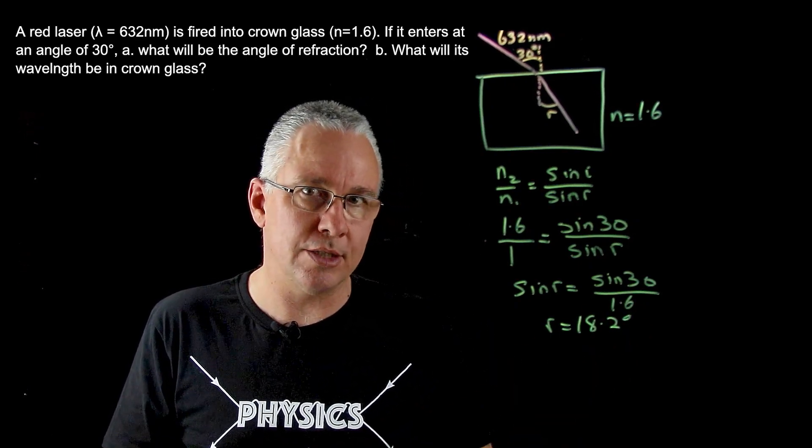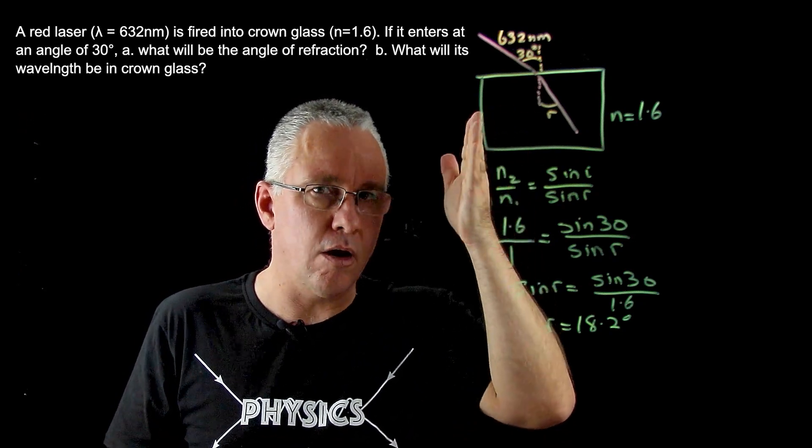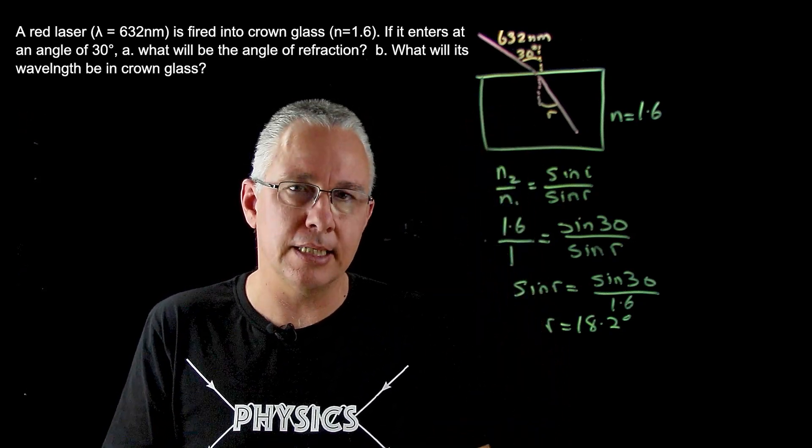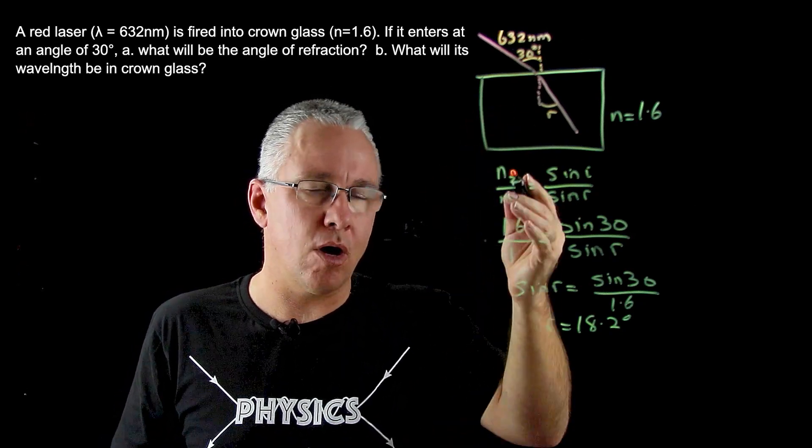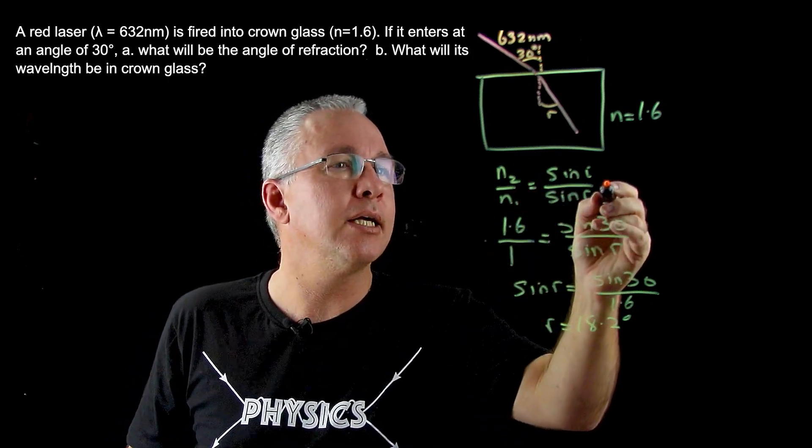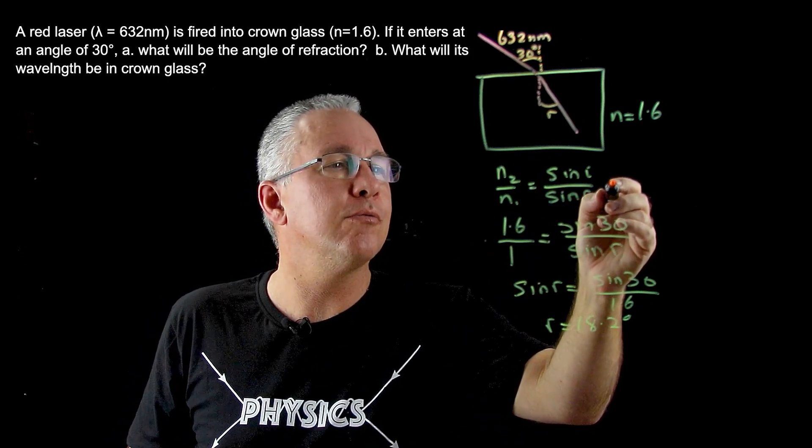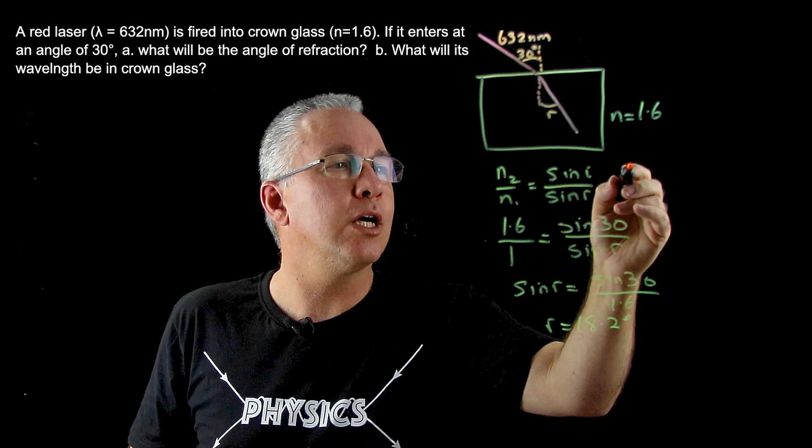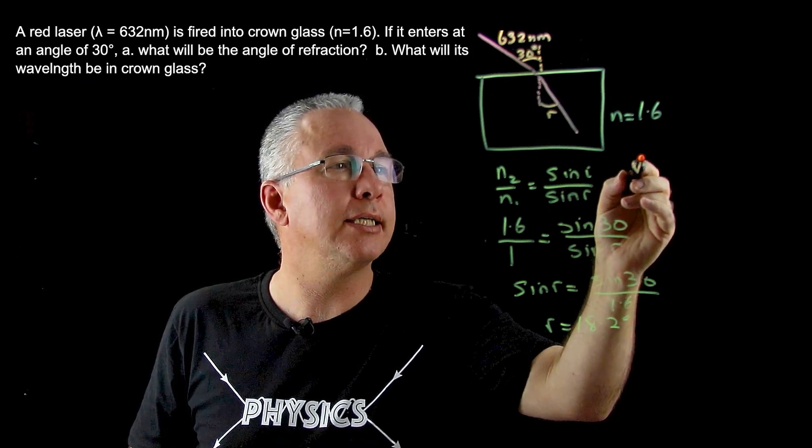Now we're then also asked to work out, well, what's the wavelength of the red light in the glass? Well, the ratio of our N2 over N1 is also equal to the ratio of the velocity of the light outside.